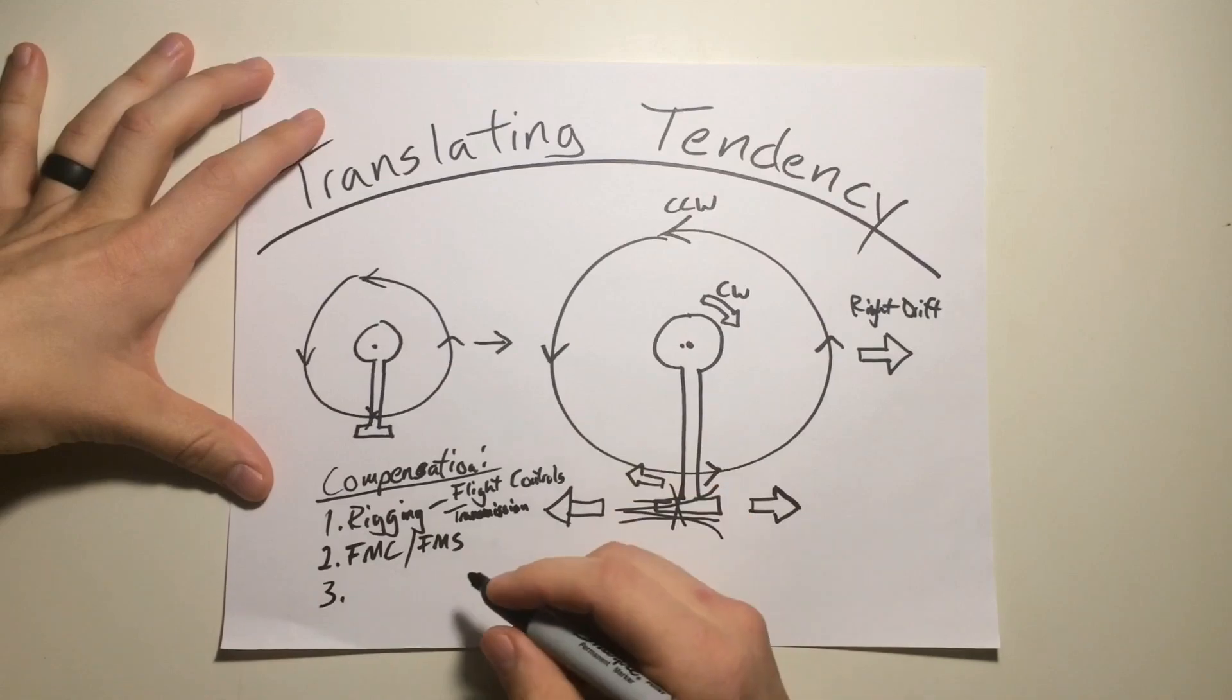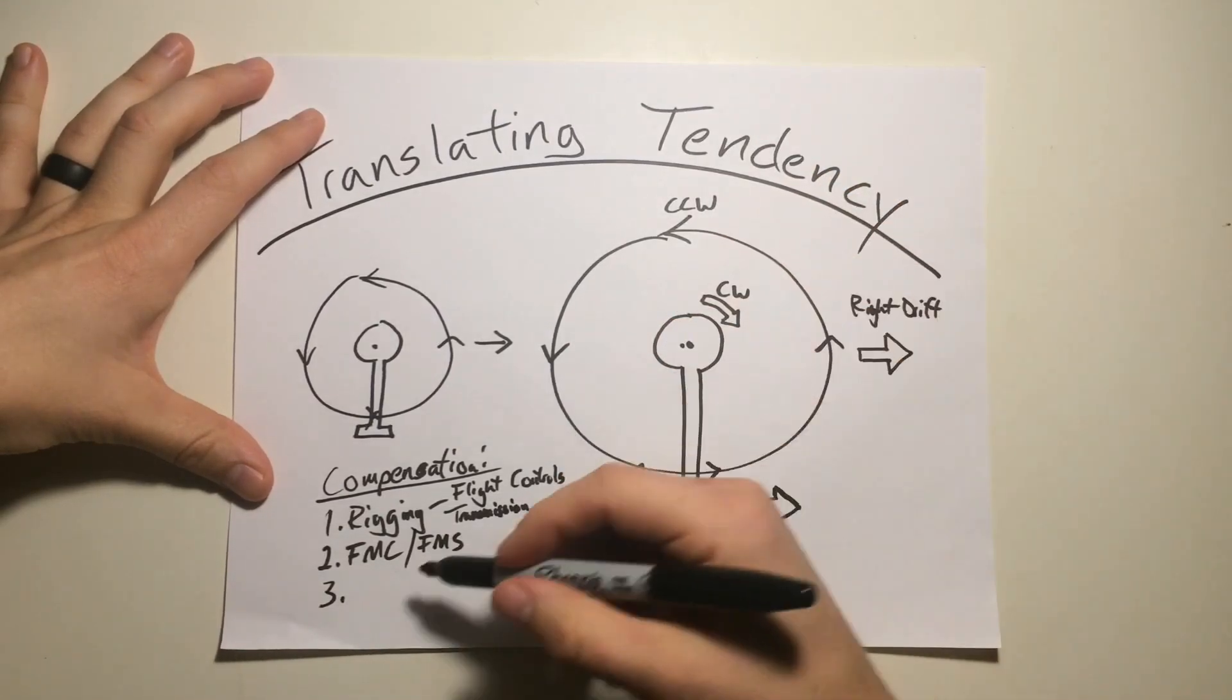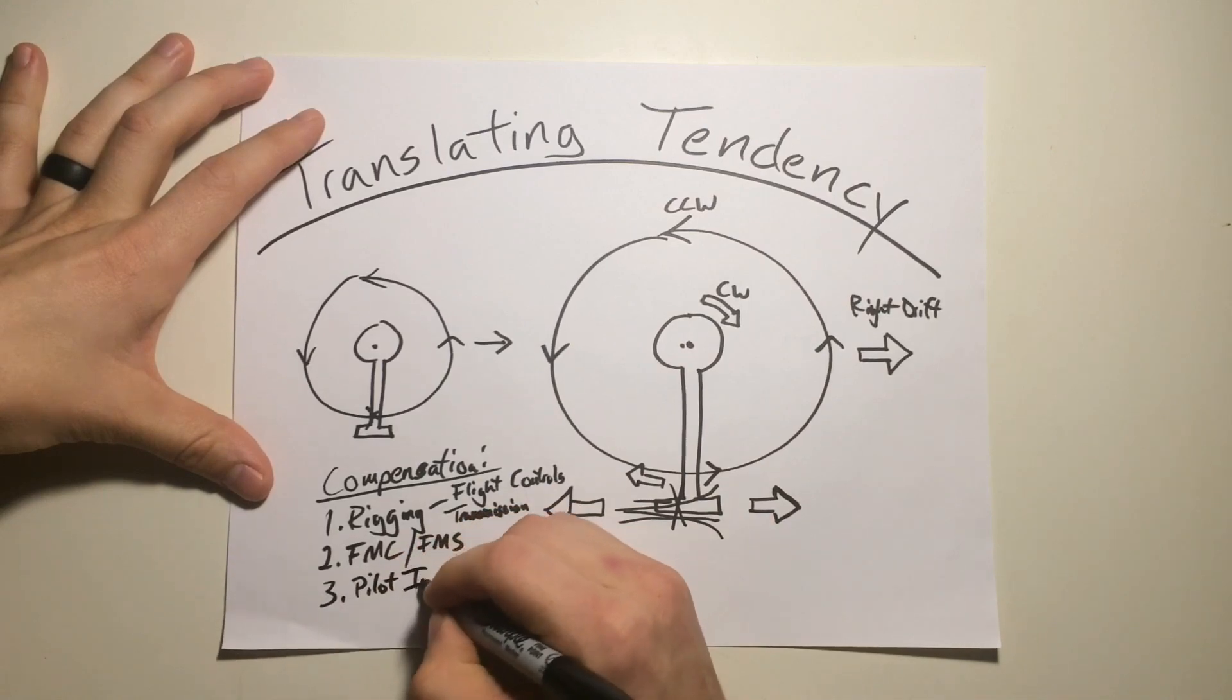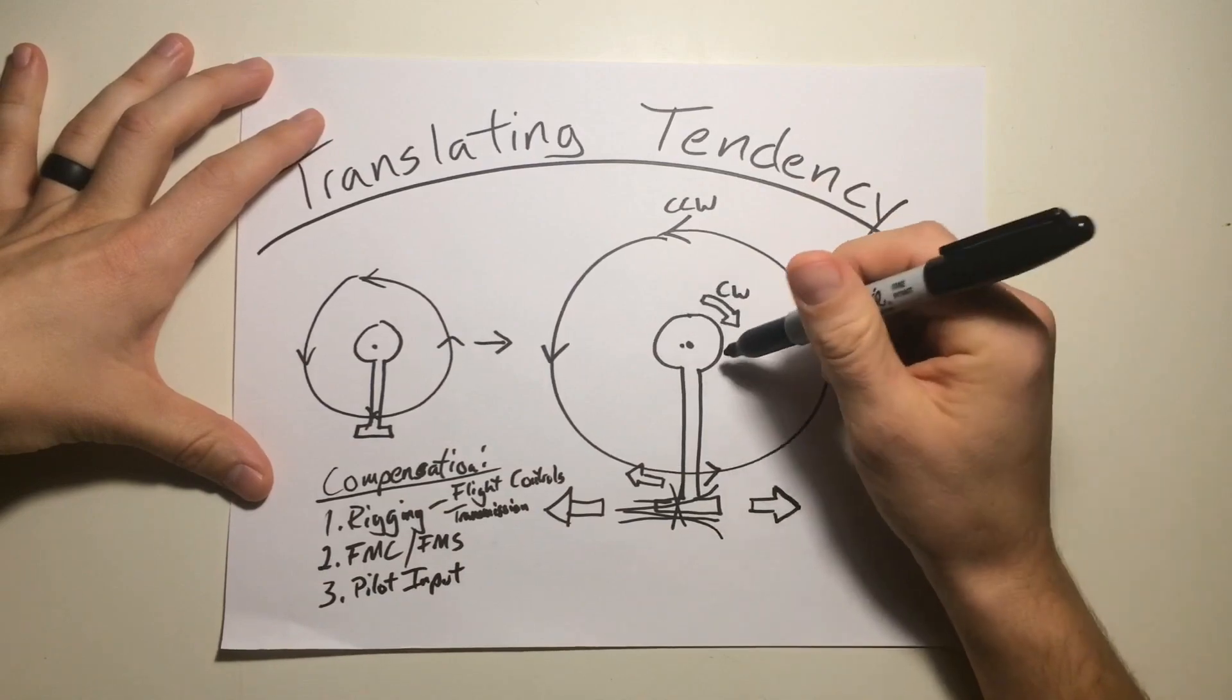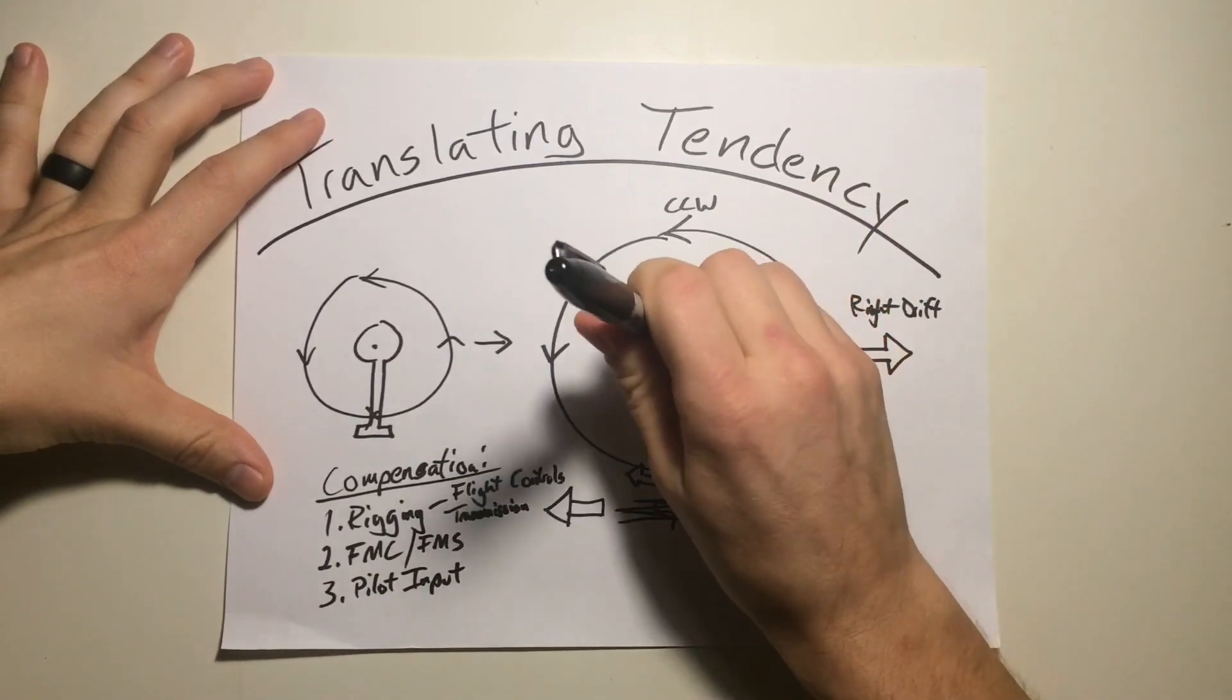Lastly, and this is mainly for your archaic type of helicopters that don't have any of this, you have your good old pilot input. So, you pick it up to a hover, the helicopter wants to drift to the right, so what do you do? You give a little bit of left cyclic.